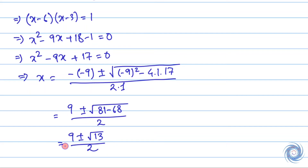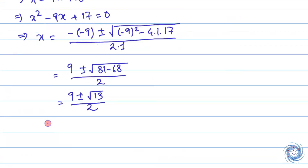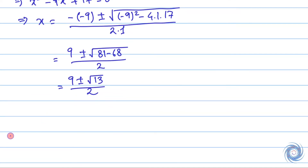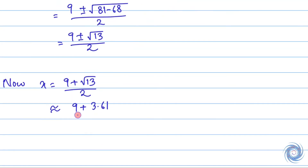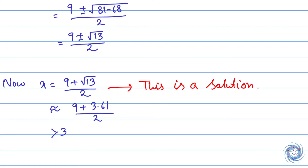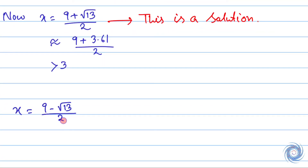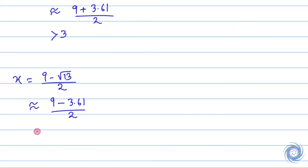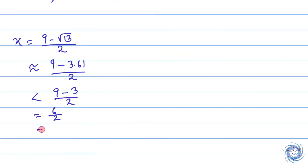Finally we have x = (9 ± √13) / 2. Let us take x = (9 + √13) / 2. Now let us take x = (9 - √13) / 2. Finally we have x < 3, and therefore x = (9 - √13) / 2 is not a solution.